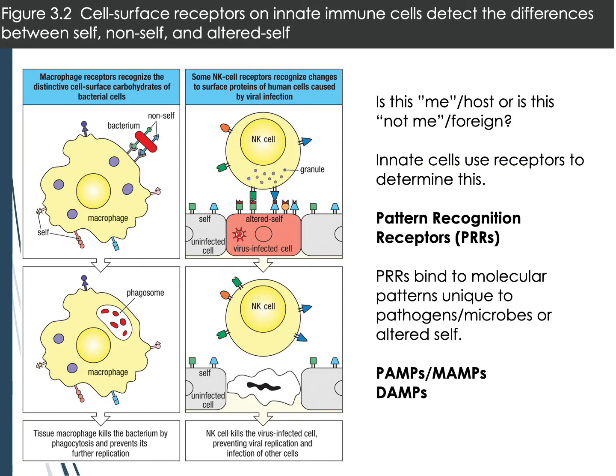Looking at innate cells, an important distinction of some of their surface markers is that they allow the cell to distinguish between self, non-self, and altered self. You have markers on your cells — called HLAs or MHCs — that indicate you are you. Foreign cells don't have those same markers. Innate cells pick up on those differences, asking: does this cell have the marker of self? If not, does it have patterns that are not self?